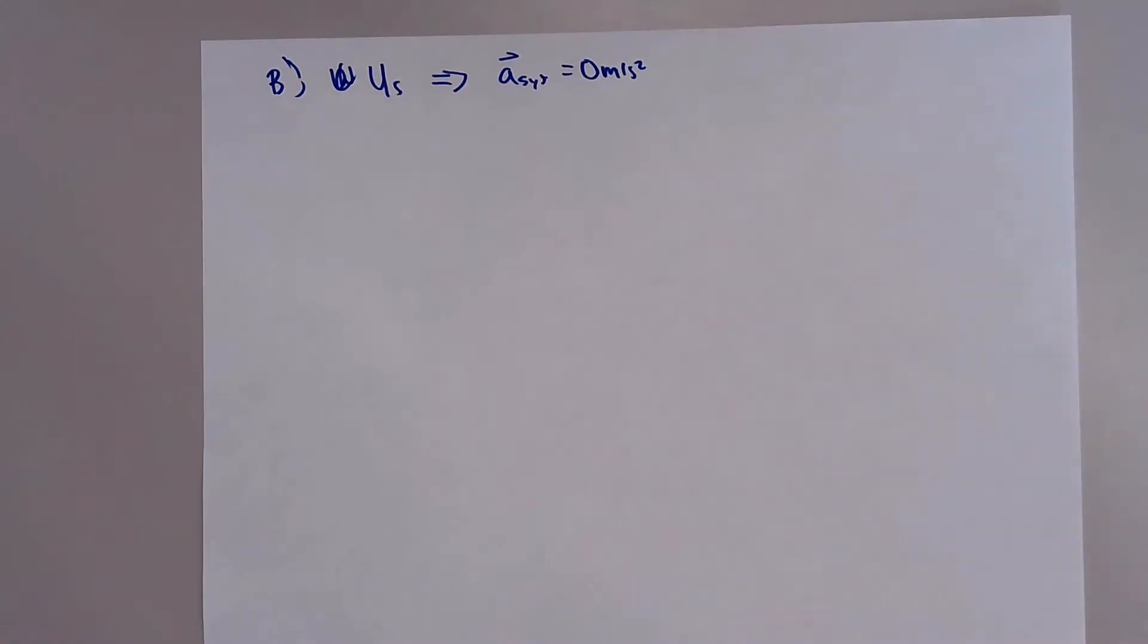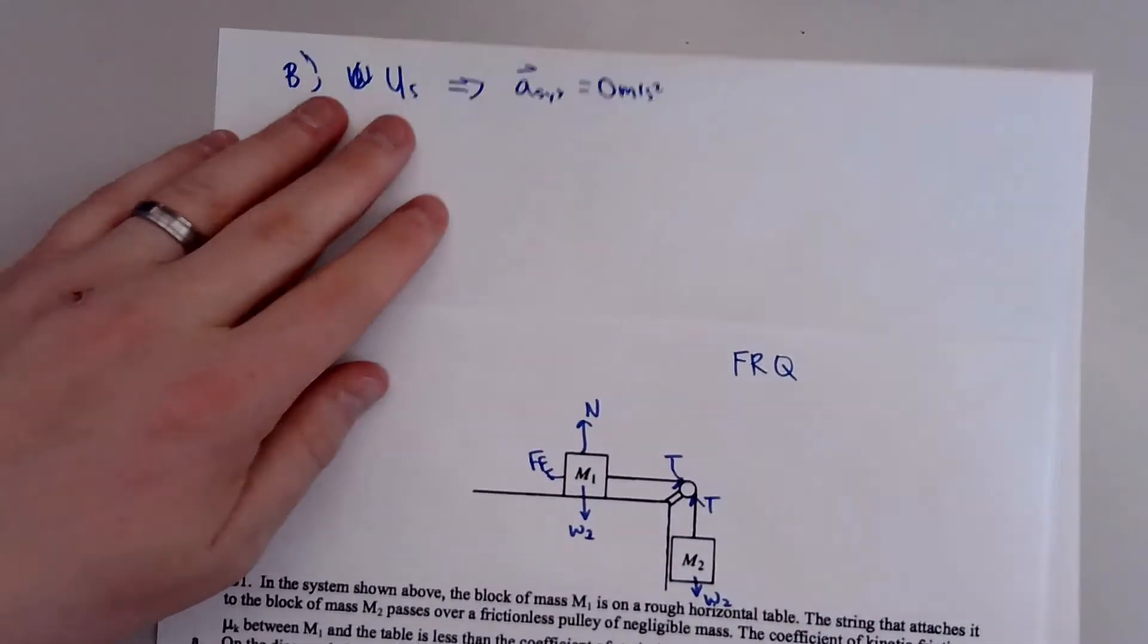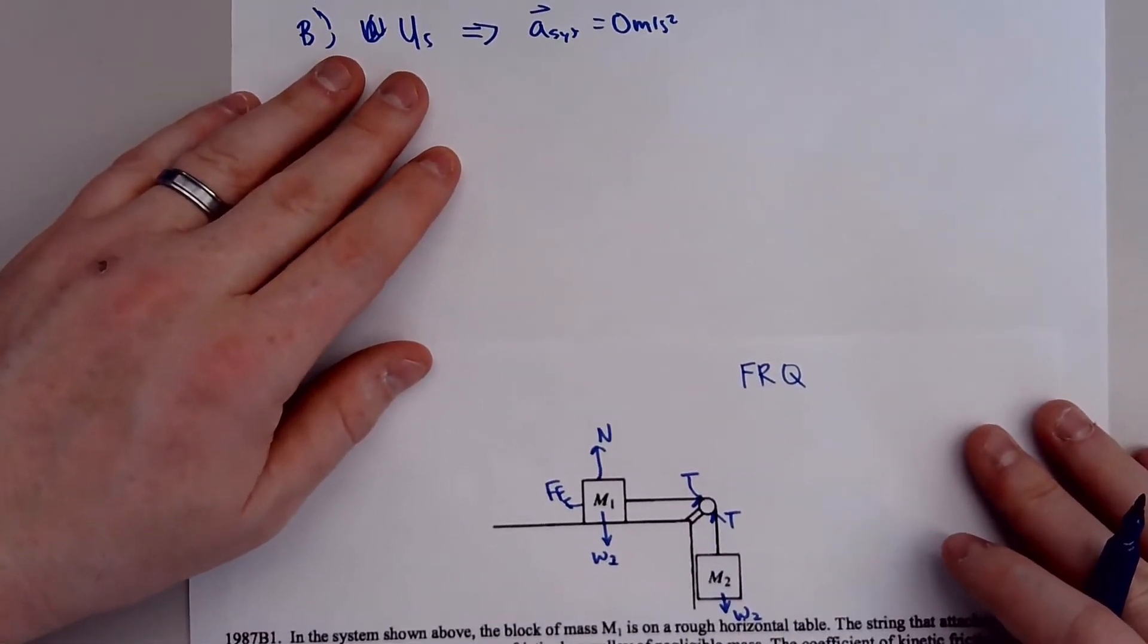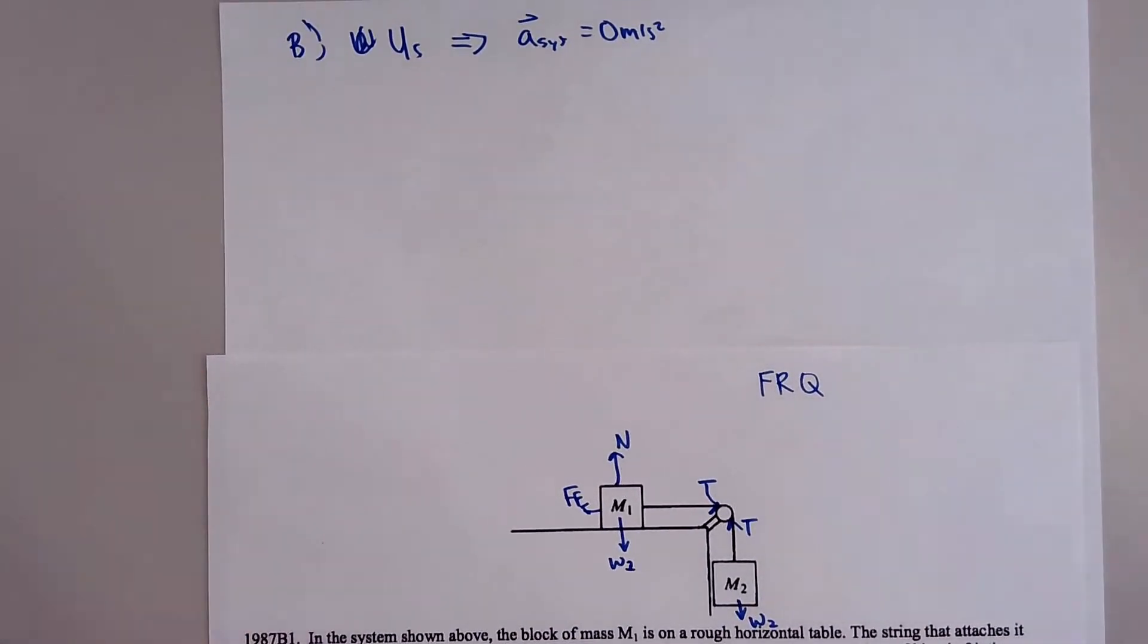So pretty much what it's saying is, how strong or how large does that coefficient have to be in order for these two systems not to move? Okay. So let's look at it like this. I'll kind of take this and put it right here. Now, if we look at this, the first thing we need to realize is, well, what are all of our forces acting on this system?